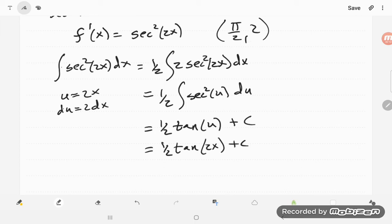But then we want to make this condition true, so we're going to try to find c here such that if we have 2, that should have come from 1 half tangent of 2 pi over 2 plus c.